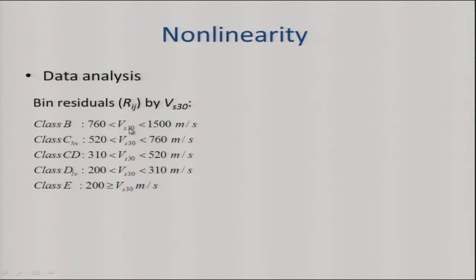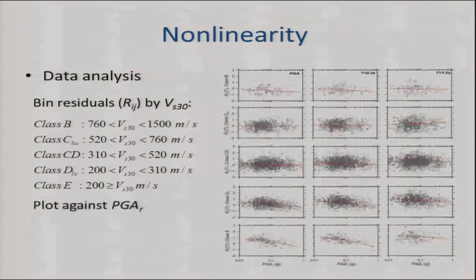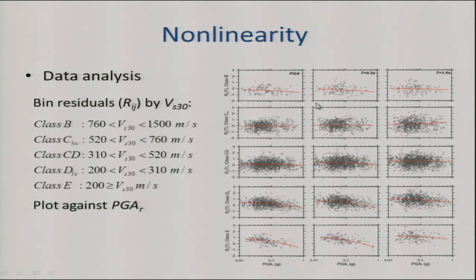We took results from Ronnie Kamai and colleagues' simulations — amplification versus PGA — and extracted slopes to compare in an apples-to-apples sense with our empirical slopes. We basically eyeballed the combined result and built a model, adjusting coefficients to pass through in a way that we think is reasonable. When we get to long periods, there is some apparent nonlinearity in the data that the simulations are not showing, so we carry forward two models: model 1 that allows nonlinearity at long periods and model 2 that does not.